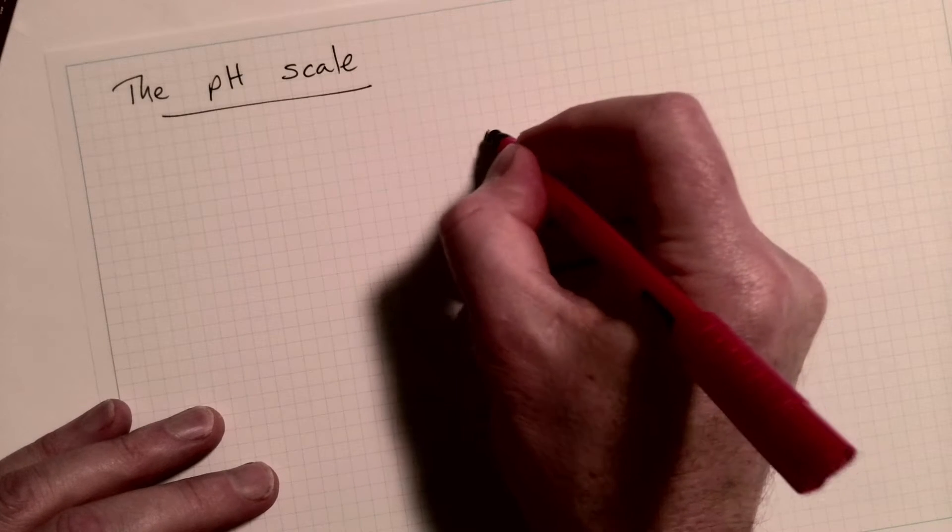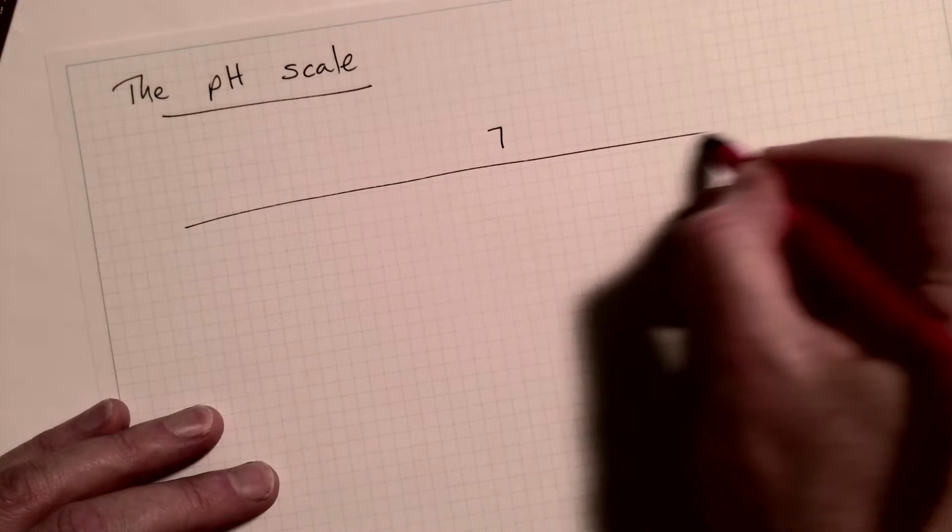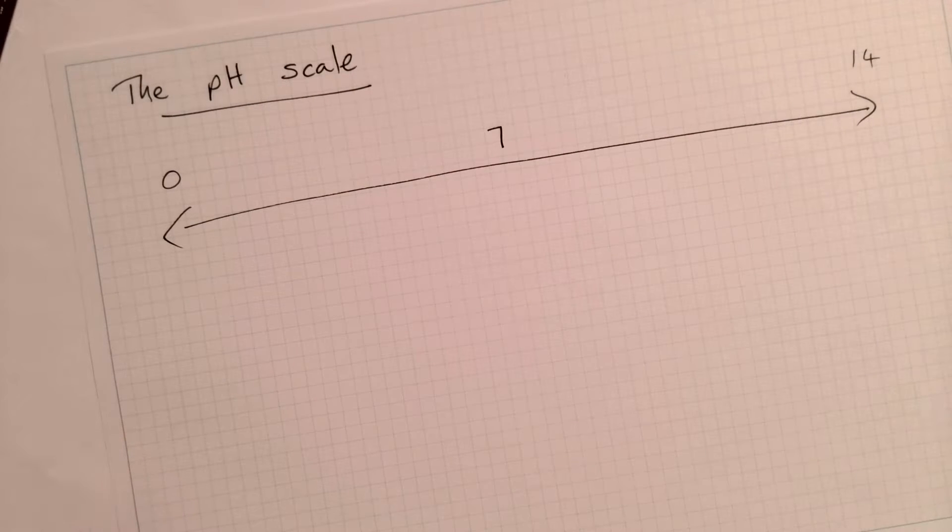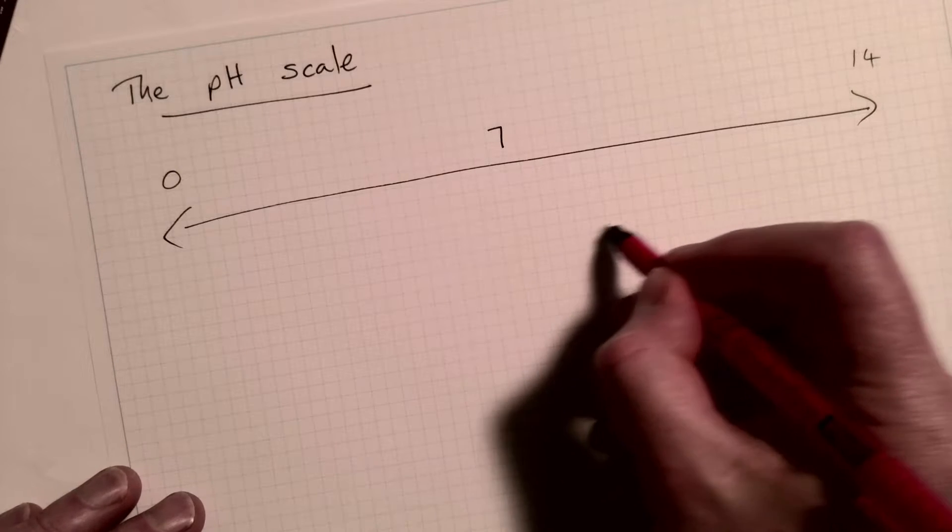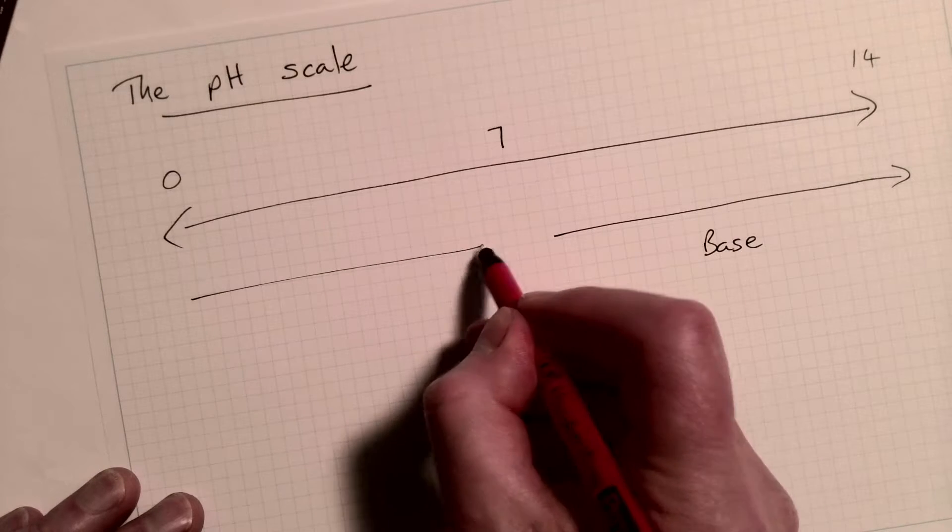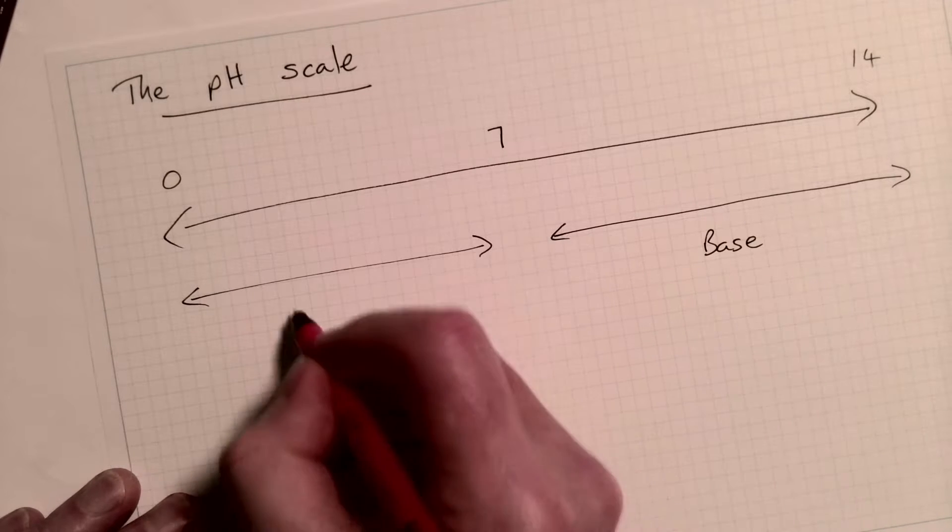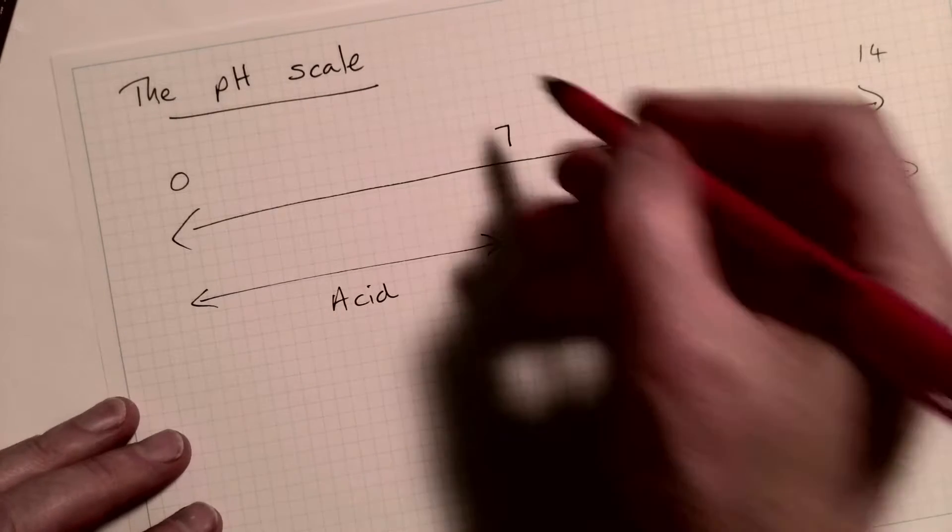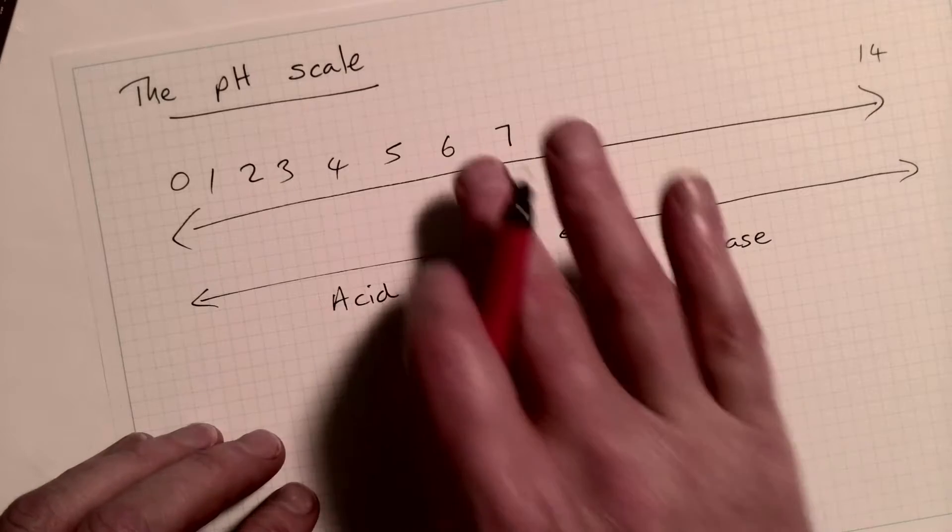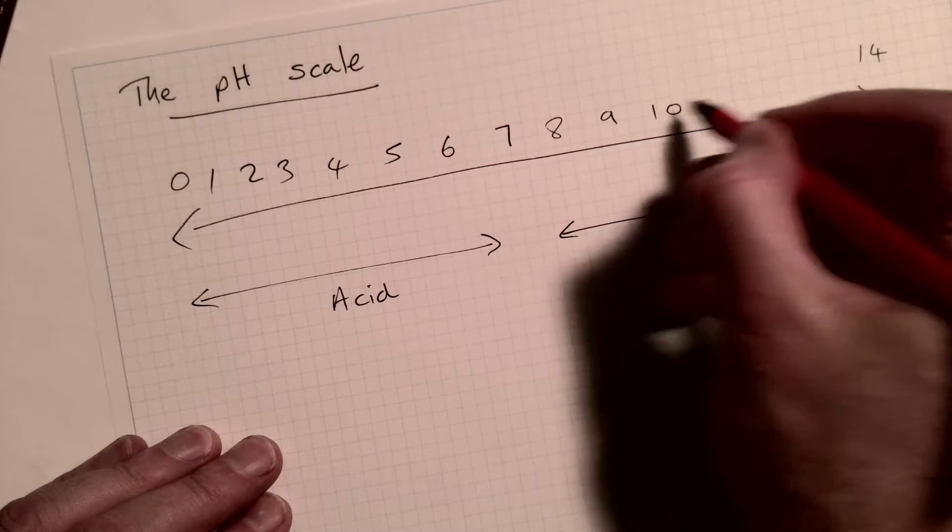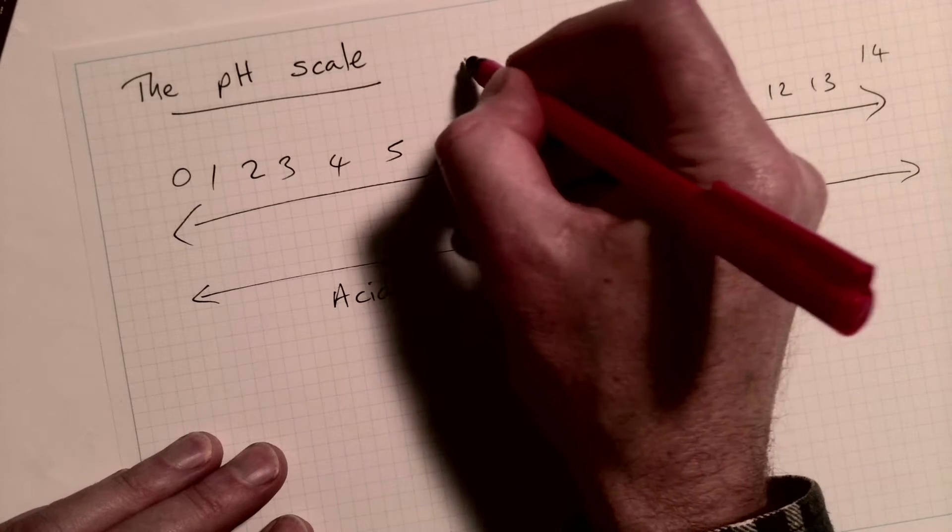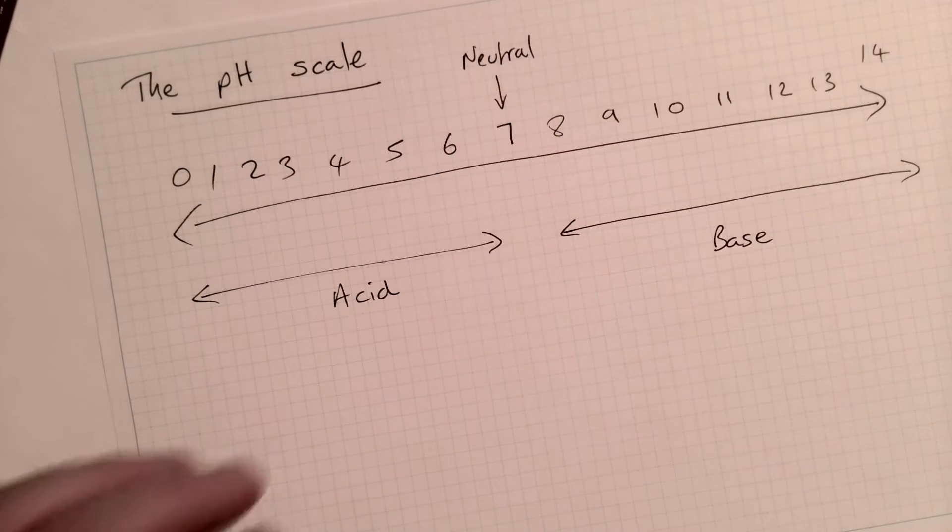So if I put seven in the center of our scale, and we've got a scale going in both directions. And down here we have zero and up here we have 14. Now, everything up here is a base. Everything down here in this zone is an acid. So we have seven, six, five, four, three, two, one, zero. We can have different levels of pH. We have eight, nine, 10, 11, 12, 13, and 14 up this end. And this is what we call neutral. The neutral point seven.